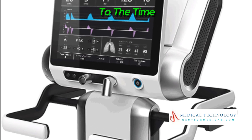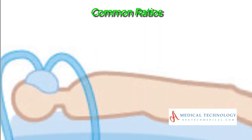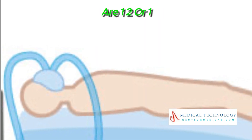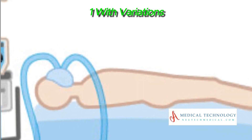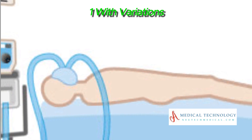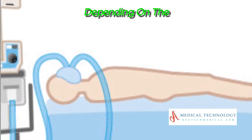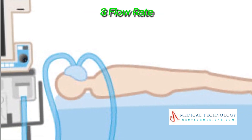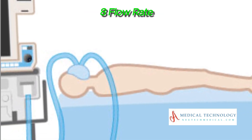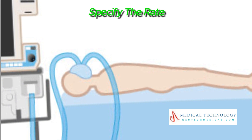Seventh, I:E ratio (inspiratory to expiratory ratio): adjust the ratio of time spent inhaling to the time spent exhaling. Common ratios are 1:2 or 1:1, with variations depending on the patient's condition.